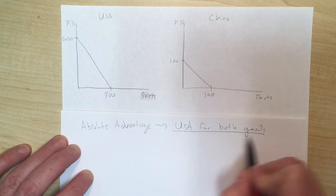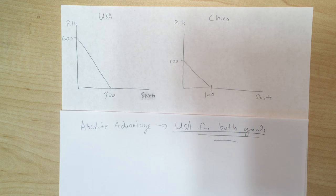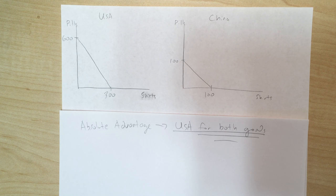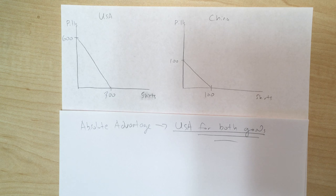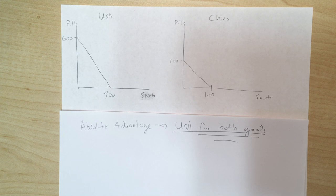Does it make sense for the US to have the absolute advantage in both goods? Yes — it's actually incredibly common. Absolute advantage just means the ability to produce more or be better at producing something, and the US likely has the absolute advantage in producing both of these goods. The average productivity of US citizens is much higher than the average citizen in China, due to how the economies are set up historically. The US is a wealthy country and China on a per-person basis is not — though that may change over time.